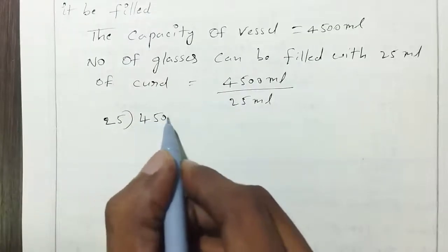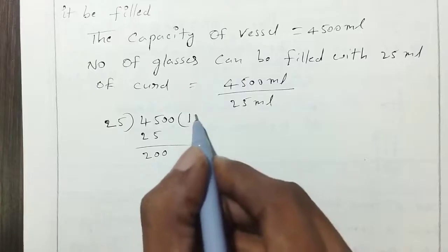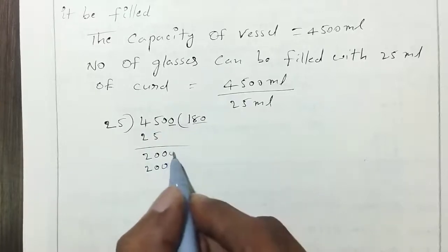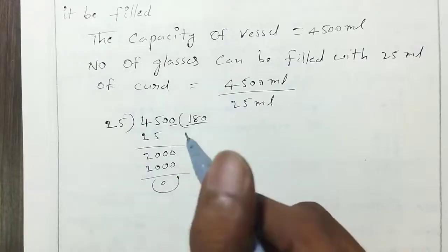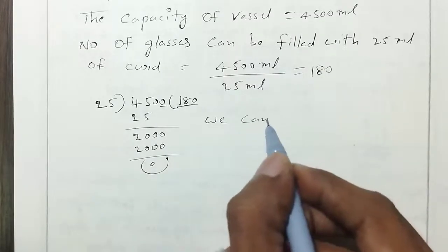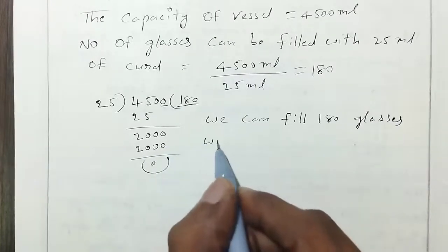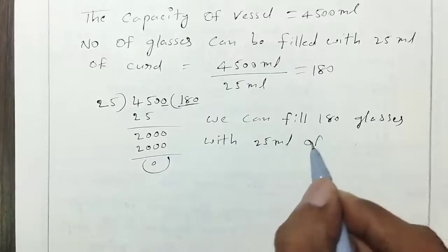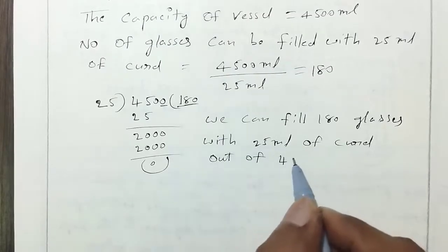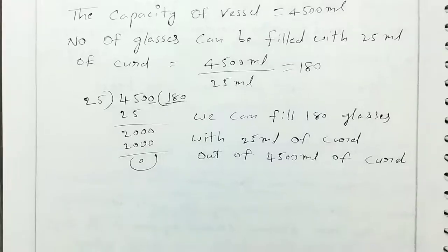Dividing 4,500 by 25: 25 × 180 = 4,500. We can fill 180 glasses with 25 ml of curd each, using all 4,500 ml of curd from the vessel.